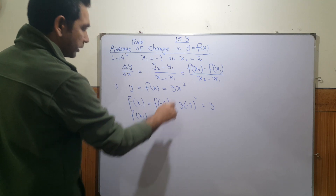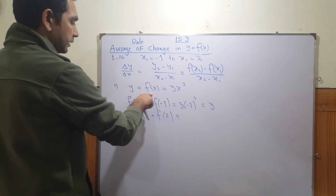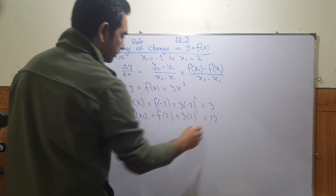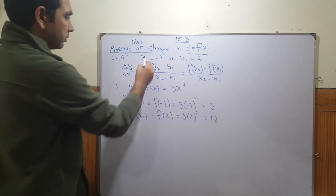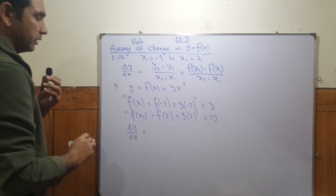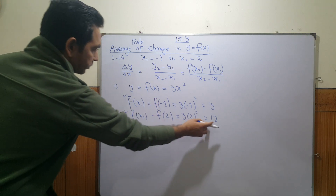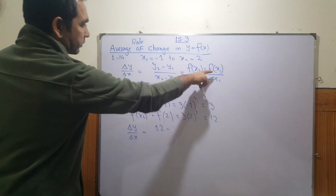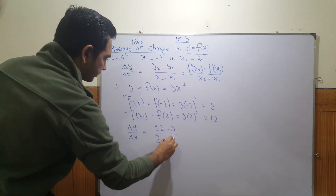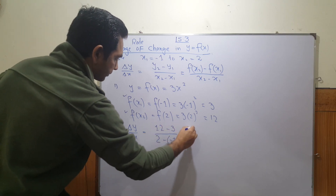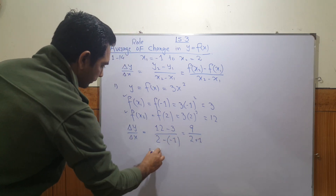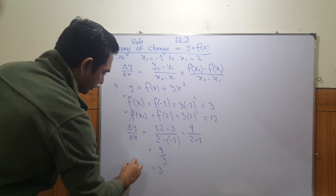For f(x₂), x₂ = 2, so we replace x with 2: 3 times 2² = 3 times 4 = 12. Now substituting into the formula: (12 - 3) divided by (2 - (-1)) = 9 over 3, which gives us 3. So the average rate of change is 3.